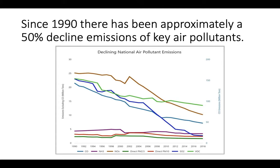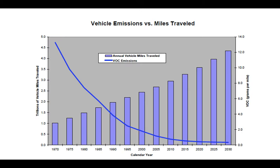The Clean Air Act has had a substantial impact on key air pollutants: carbon monoxide, ammonia, nitrous oxide, particulate matter of different sizes, SO2, and VOCs. You can see dramatic decreases in all of those since 1990. Some dropped a lot, like NOx. If we look at VOCs — the blue line — that has dropped substantially since 1970 despite the fact that we're actually driving more than ever. So despite increased fossil fuel combustion for cars, we are decreasing VOC emissions thanks to the Clean Air Act.